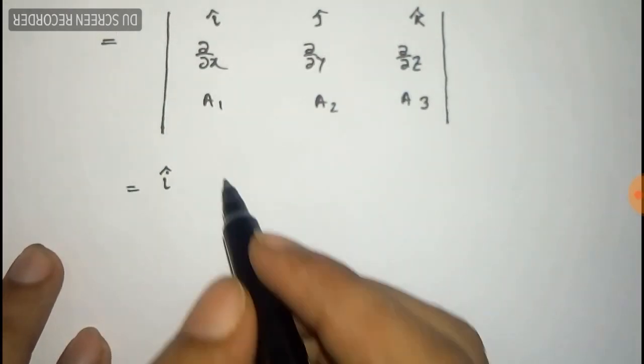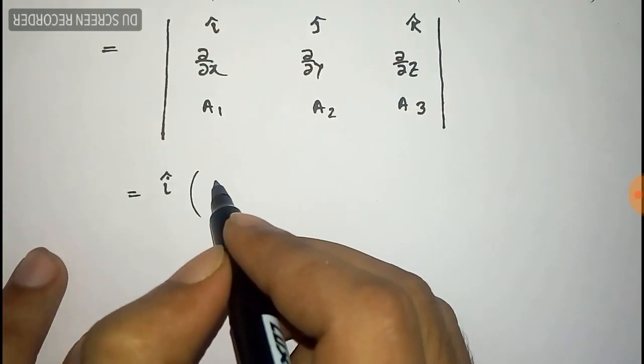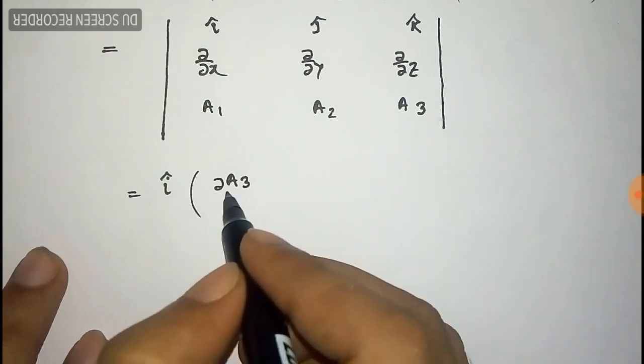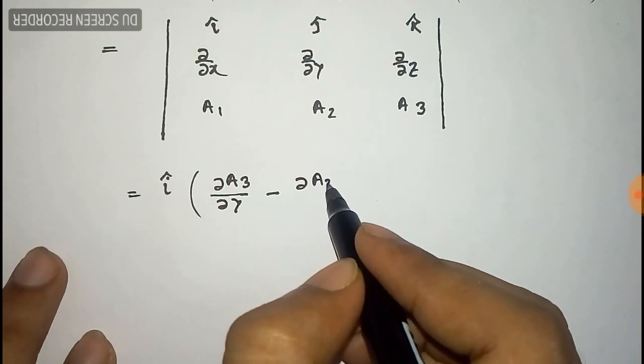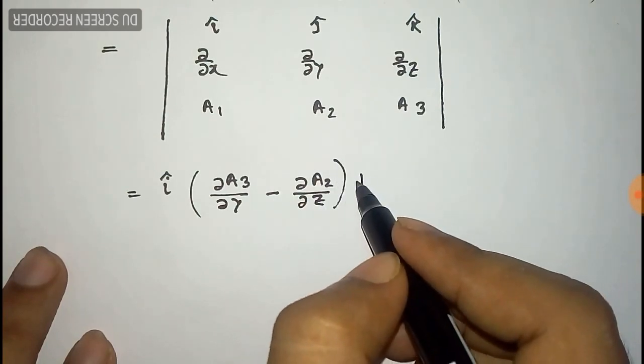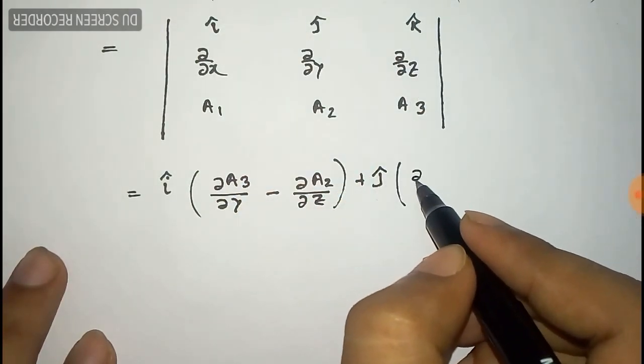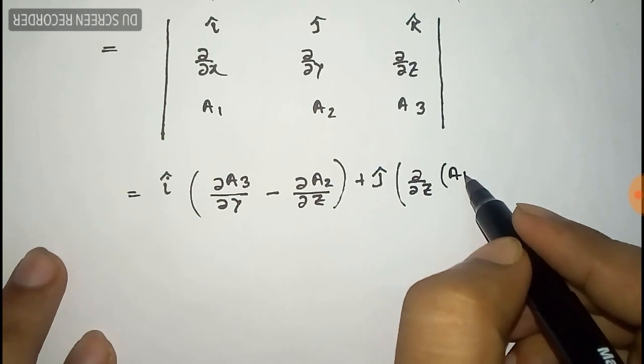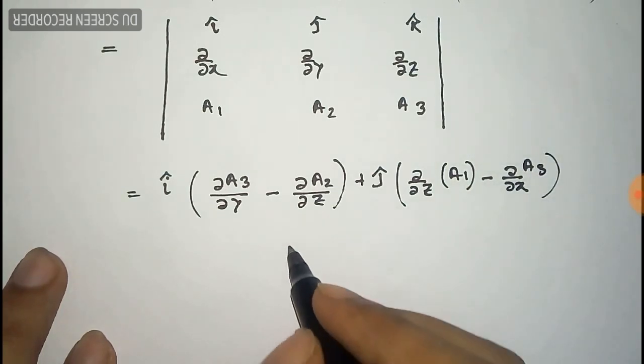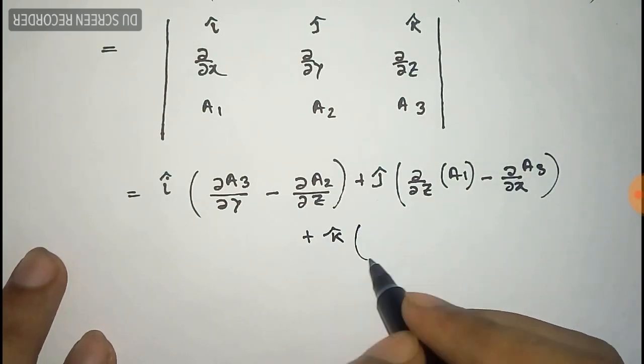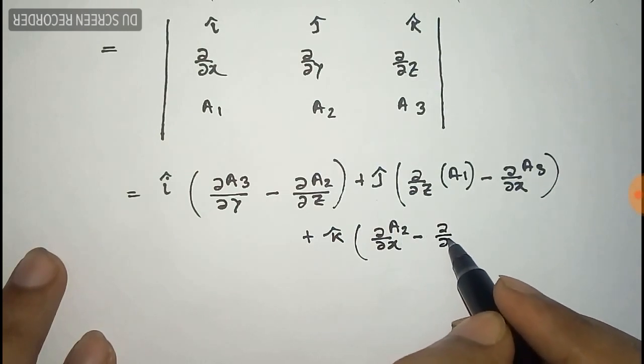And then by the determinant formula of the matrix, we get î(∂a₃/∂y - ∂a₂/∂z) plus ĵ(∂a₁/∂z - ∂a₃/∂x) plus k̂(∂a₂/∂x - ∂a₁/∂y).